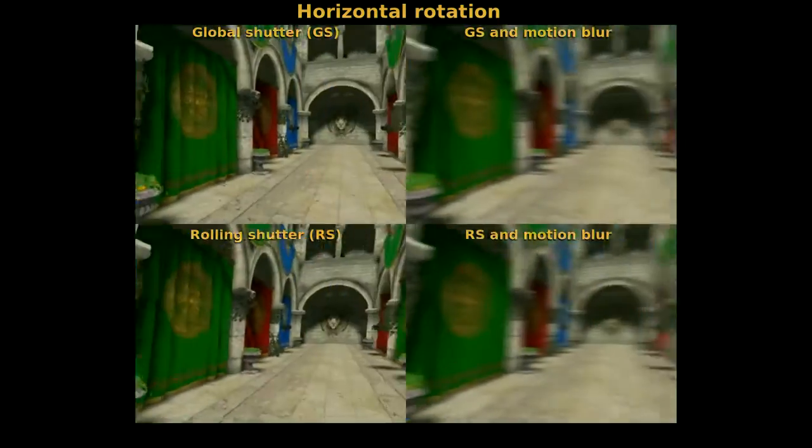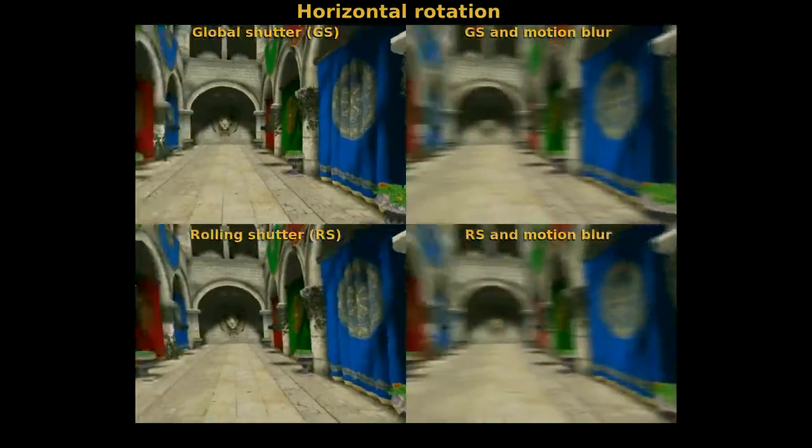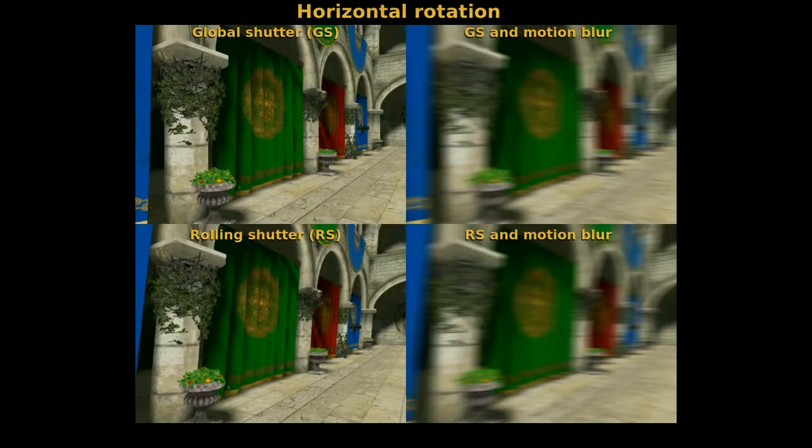This first simulation considers horizontal rotations. Note that the rolling shutter moves from bottom to top inducing slanted vertical lines. Look at the difference in slant of the curtain.